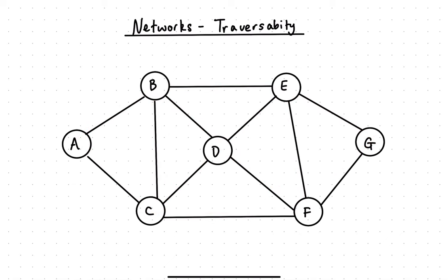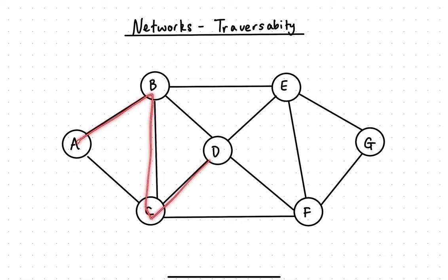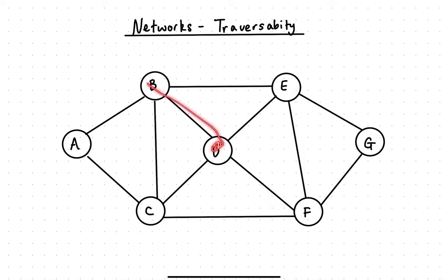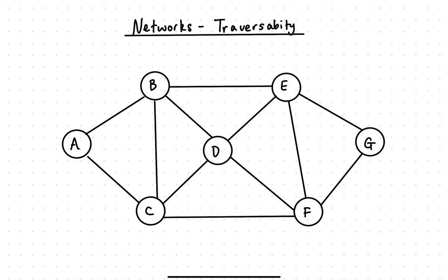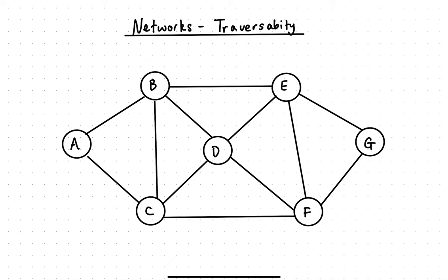You don't necessarily need to be able to look at a diagram and do what I've just done — starting at a point and drawing around it — or any other method you may choose. There are multiple ways of getting around this network travelling along edges only once. But what you do need to be able to do is investigate a key feature about the nodes and edges of the network, which will tell you whether the diagram is either fully traversable, semi-traversable, or not traversable.